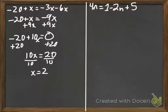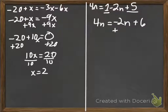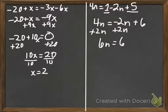On the right example, we combine on the right side: we combine 1 and positive 5. It says 1 plus 5, so we get 4n equals... we put negative 2n in front since we didn't do anything to it, and 1 plus 5 is 6. Now we get our variables on one side by adding 2n — the opposite of negative 2n — to both sides. We get 6n equals 6, divide by 6, and n equals 1.